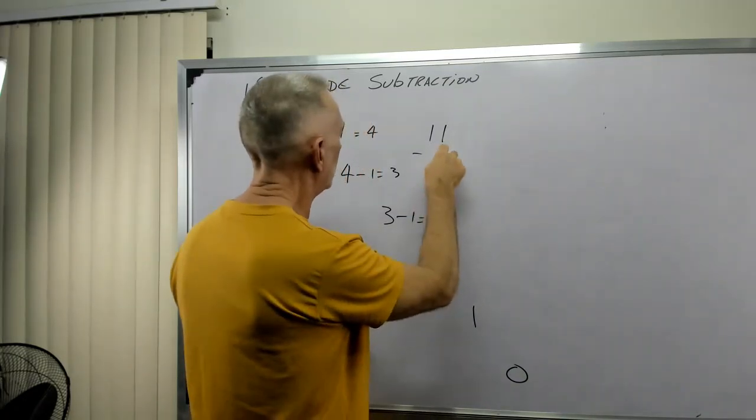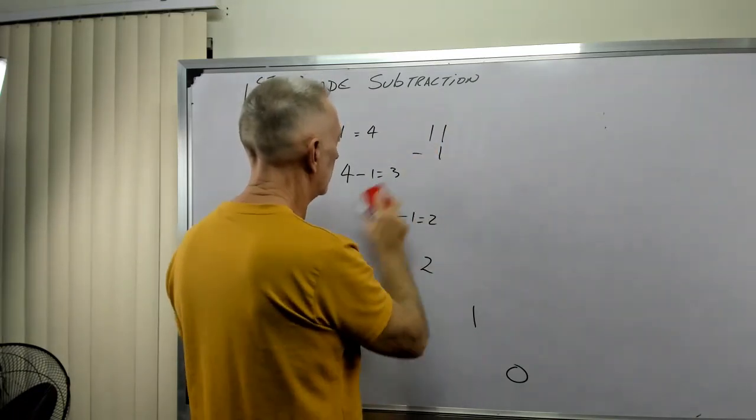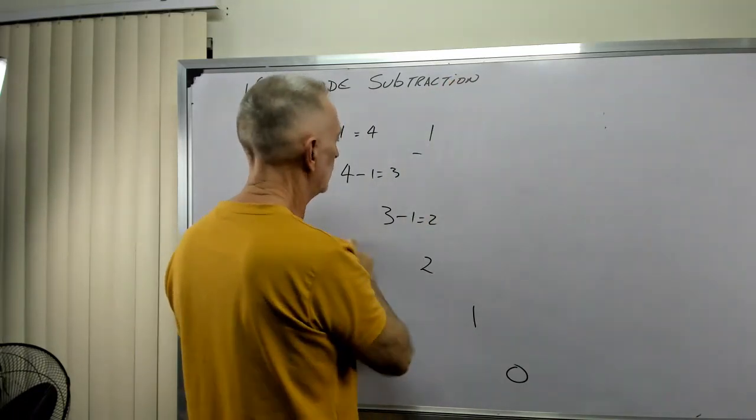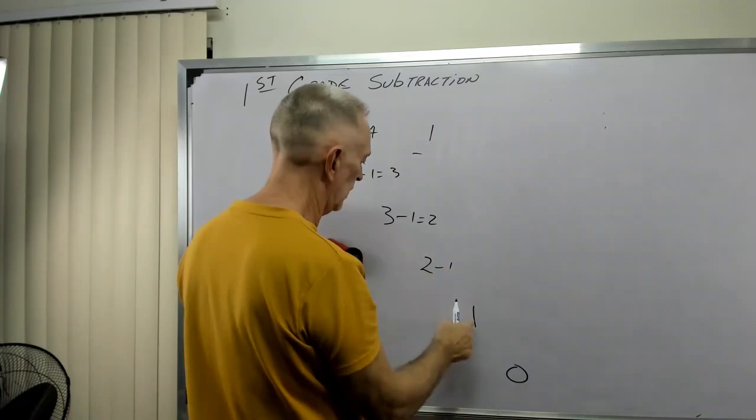Now, two minus one. This one and that one cancel. Two minus one is one.